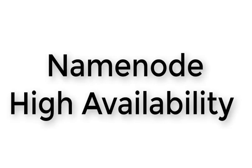Hello guys, welcome to the course on Hadoop basics. My name is Sigish and in this video I will show you what is name node high availability. In Hadoop 1.0, only one name node is supported, and even though we have a secondary name node, it cannot do an automated failover. So in case the active name node goes down, maybe due to planned maintenance or an unplanned outage, the entire Hadoop distributed file system becomes unavailable.